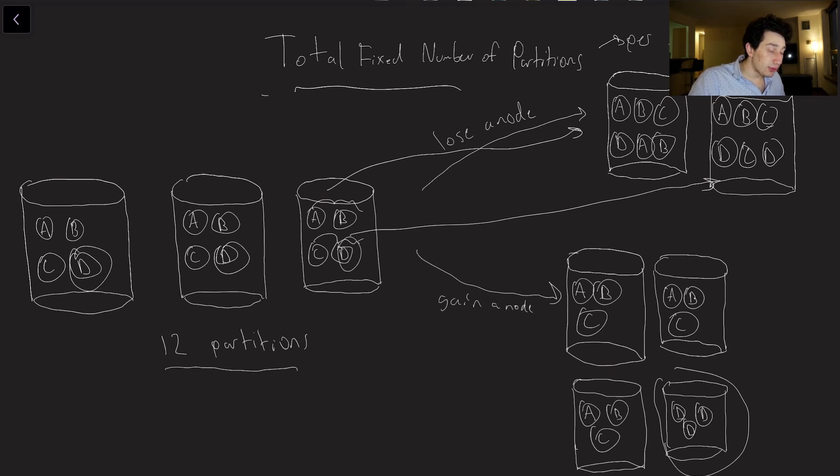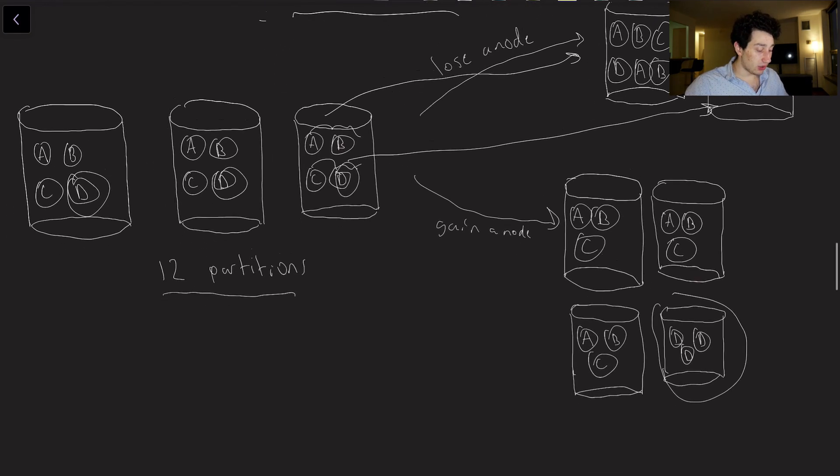So basically using a fixed number of partitions is very viable in the sense that it's simplistic to think about, right? We know at all times how many partitions there are total, and so we can easily assign them from node to node. However, it also does come at a downside, which is that we actually have to choose a pretty good number.